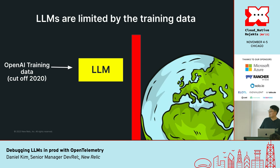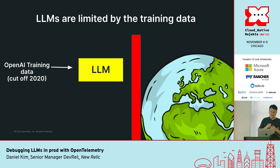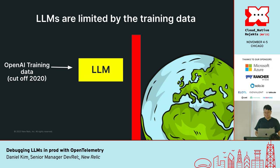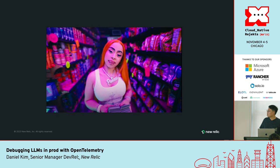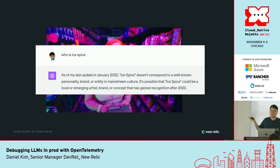The second thing that LLMs struggle with is the limit of their training data. ChatGPT constantly updates their training data, but at the time of writing this slide, the OpenAI training data cut off in 2020 — I think they've updated it now to 2022. That means it can't answer questions about things happening in the real world right now. One of my favorite new artists of 2023 is Ice Spice, and if I ask who is Ice Spice to ChatGPT, it has no idea who she is.